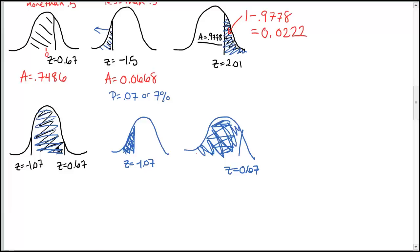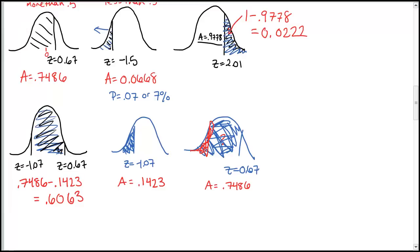We take the little area, subtract it from the bigger one, and find the area in between. Look up both in the table and subtract them. We have 0.7486 — that big area — minus the little area on the left, and that difference is our answer. So we're getting an area of 0.6063. This means about 60% of the data falls in between these two values.